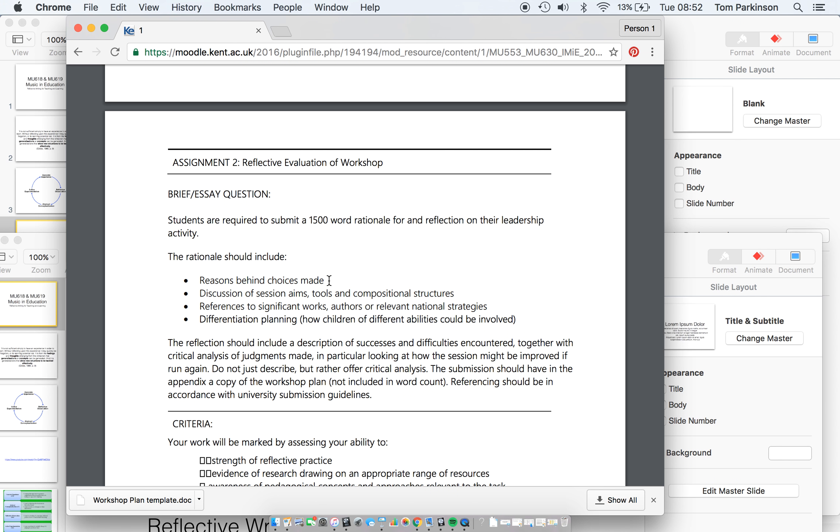So for example, you may have chosen a particular type of music or setting because it was something... So I'm thinking of one of the groups who I know are doing something from Pitch Perfect. Now there will be a reason you've chosen to do something from Pitch Perfect, which is probably to do with students' familiarity with it. It's popular. It's well known. So you'll be engaging them on that level of familiarity.